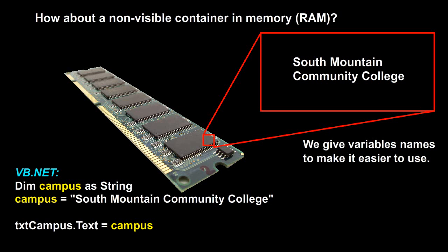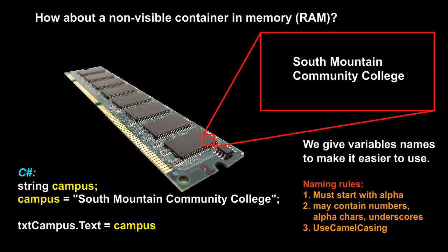We give variables names to make them easier to use. There are some conventions: variable names should start with an alpha character, usually lowercase. They may contain numbers, other alpha characters, and underscores. You should use camel casing — when giving meaningful names with several words together, since we can't put spaces in, simply capitalize the first letter of each subsequent word.